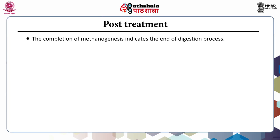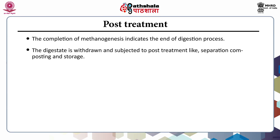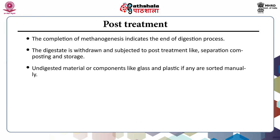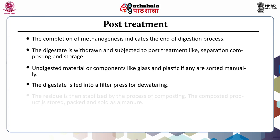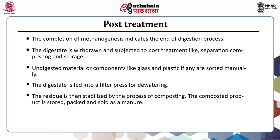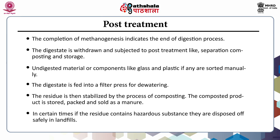On completion of the methanogenic phase, the digestion process ends. The digestate withdrawn is subjected to post-treatment: separation, composting, and storage. Undigested material like glass and plastic is sorted out manually. The digestate is then fed into a filter press for dewatering to remove water from the solid material. The residue is then stabilized by composting, then stored, packed, and sold as manure. If the residue contains hazardous substances, it is disposed of safely in landfills.